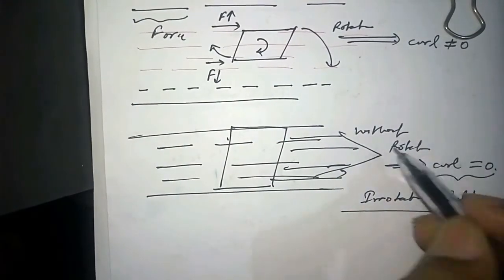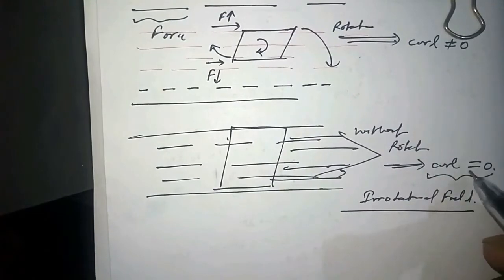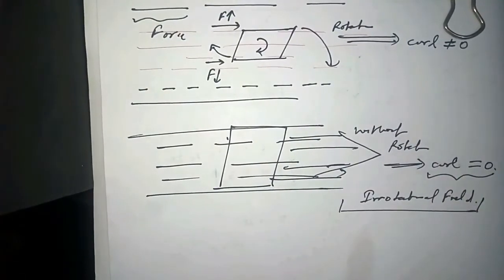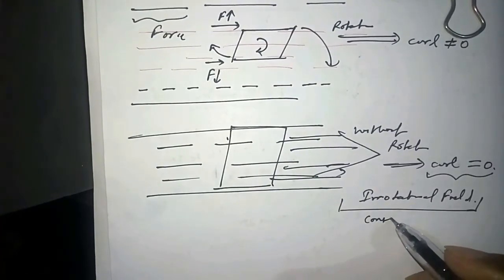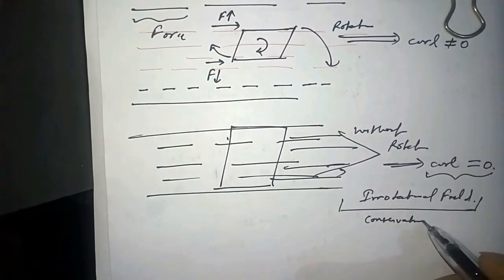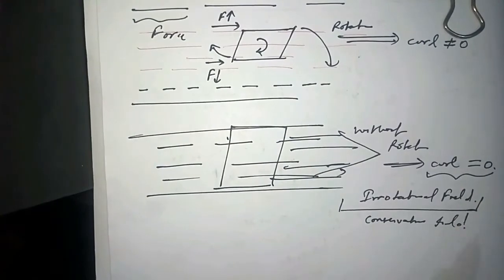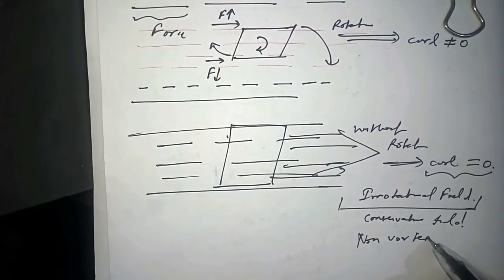Any field which has no rotation or curl equal to zero is called irrotational field. That is also called conservative field and non-vortex field.